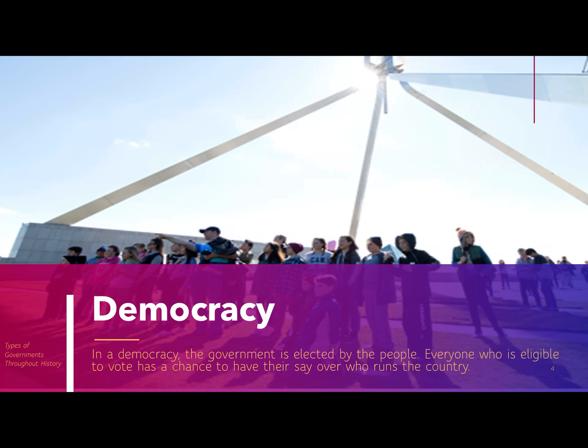We do have direct democracies in the United States today — they are called town meetings. In small towns in New England, all the citizens that show up on a certain day literally vote on every law in the community. There is actually a direct democracy very close to us: it's in Feral Valley, an enclave inside of Mineral Wells. The people who live there meet together once a year and decide things like who's going to take care of the pond and the gravel road and how much it's going to cost everybody.